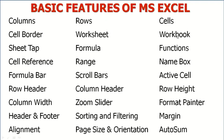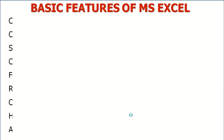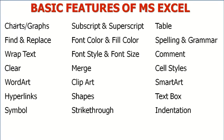So you have: columns, rows, cells, cell border, worksheets, workbook, sheet tab, formula, functions, cell reference, range, name box, formula bar, scroll bars, active cell, row header, column header, row heights, column width, zoom slider, format painter, header and footer, sorting and filtering, margin, alignment, page size and orientation, auto sum, charts and graphs, subscript and superscript, table, find and replace, font color and fill color, spelling and grammar, wrap text, font style and font size, comments, styles, word art, clip art, smart art, hyperlinks, shapes, text box, symbols, strikethrough, and indentation.